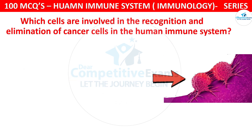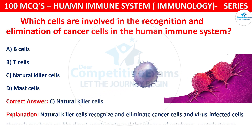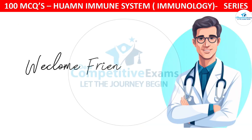Which cells are involved in the recognition and elimination of cancer cells in the human immune system? The options are B cells, T cells, natural killer cells, or mast cells. The correct answer is C, that is natural killer cells. Natural killer cells recognize and eliminate cancer cells and virus-infected cells through mechanisms like direct cytotoxicity and release of cytokines, contributing to immune surveillance against tumors.